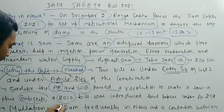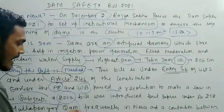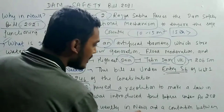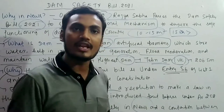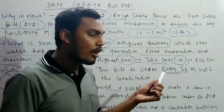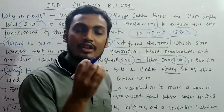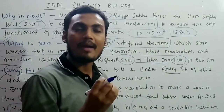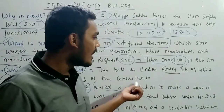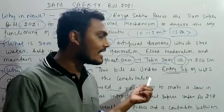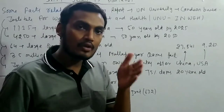A prominent example highlighting the need for this bill is the Mullaperiyar Dam, which has frequently been in the news as a point of contention between Kerala and Tamil Nadu. This context leads us to examine why this bill is needed, supported by relevant data.